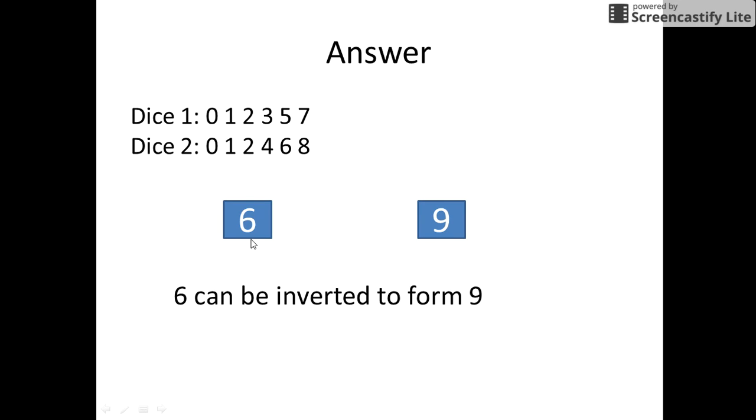So, the trick here is 6 can be inverted to form 9. We can print 3, 4, 5, 6, 7, and 8 on the remaining faces of the two dices and hence represent all the dates of a month. Keep watching, subscribe, and stay tuned.